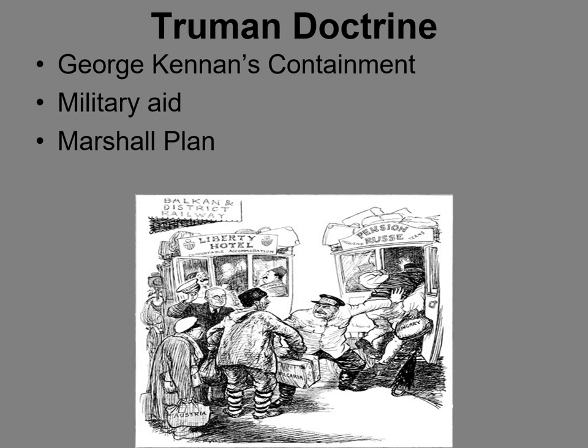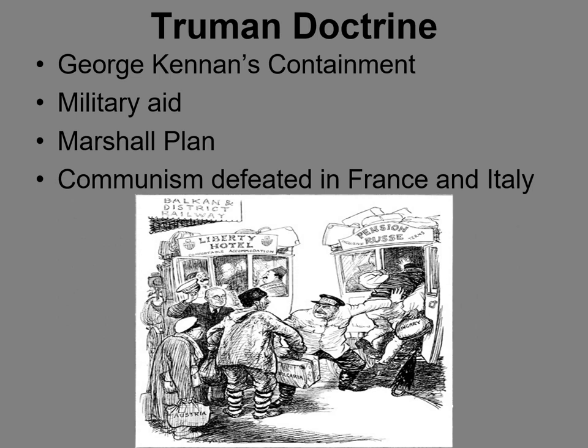The Truman Doctrine found two ways to attempt this containment. One, military aid — give weapons and supplies to countries who were attempting to put down communist revolutions, as well as training their armies on how to do so. But more importantly, monetary aid — billions of dollars to rebuild Europe and strengthen their economies. Both Truman and Kennan understood the best way to thwart communism was to have a successful capitalist economy and a strong middle class. And it worked in places like France and Italy, and even in Japan.